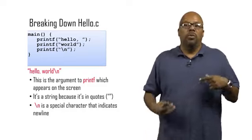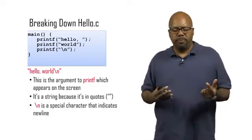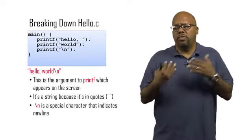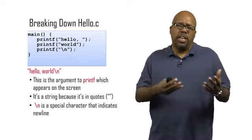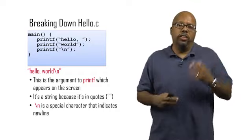But slash n is useful because a carriage return is something you often want to print. And even in the Arduino, when we start using the serial interface, we'll be printing stuff to the screen for diagnostics and debugging. And we'll want to put carriage returns in there so that we can read the text.